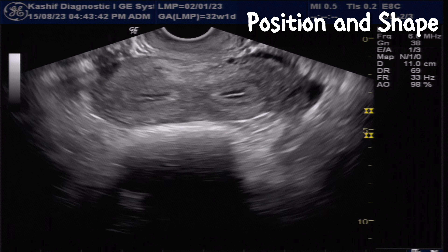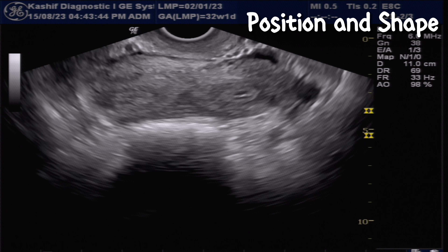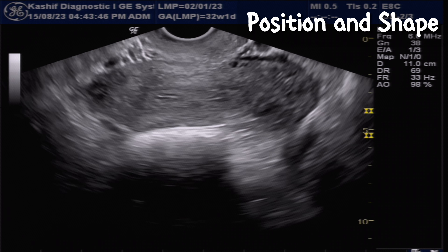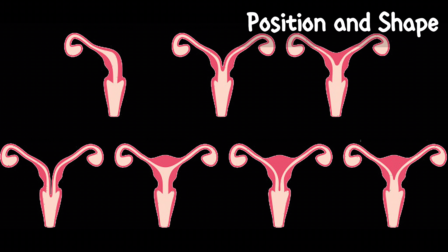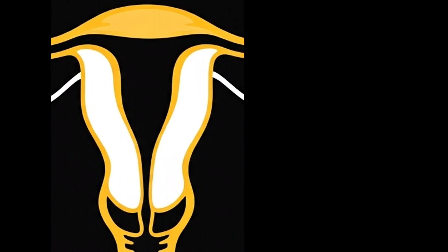Other positions like retroverted and retroflexed can also be detected, but they usually don't affect fertility. Abnormal shapes of the uterus can also be detected by ultrasound. The most common abnormalities are bicornuate, septate, and didelphys uteri. These conditions can sometimes cause complications and increase the risk of miscarriages.